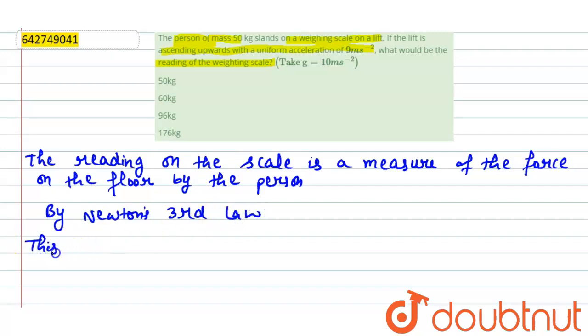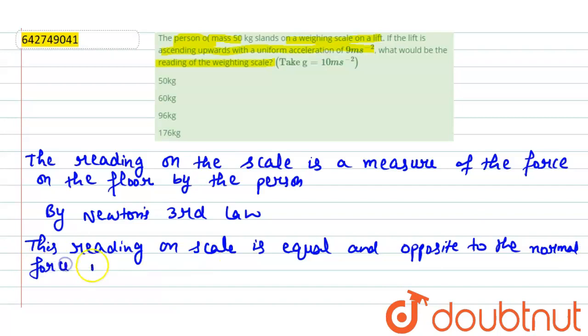this reading on scale is equal and opposite to the normal force N on the person by floor, right.